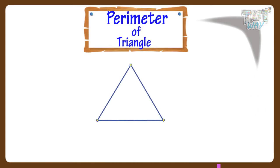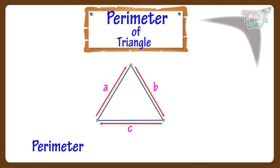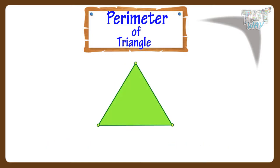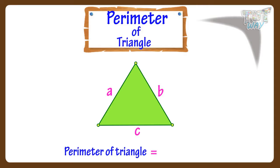Perimeter is the distance around the edges of a triangle. If we have to find the perimeter of a triangle, we just add up the lengths of all the edges. Like here is a triangle with its sides A, B and C. So the perimeter of this triangle will be A plus B plus C, that is the sum of all the sides of a triangle.